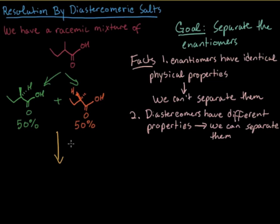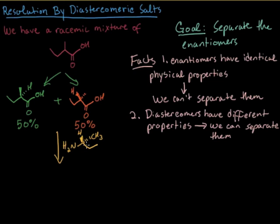How we're going to do that is we need to add something — kind of like another piece into the whole process — that will link onto both of the enantiomers and make them into diastereomers. So what we're going to use right now is this amine. The important part is that the amine itself has a stereocenter, and we're only using one enantiomer of the amine. So even though it's chiral, we're just using one of them.